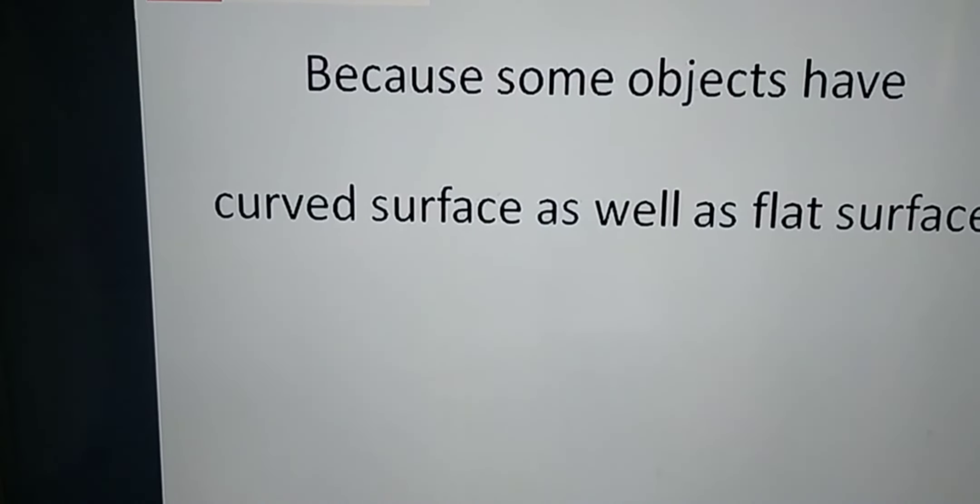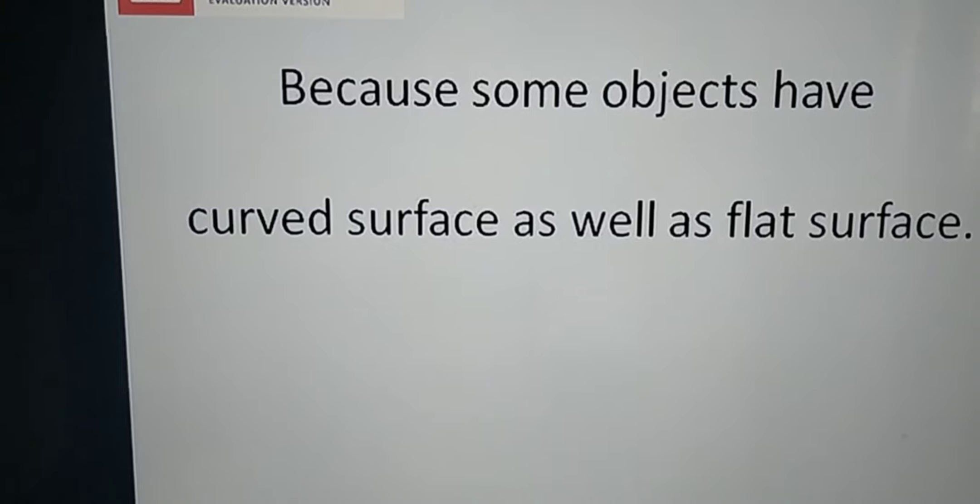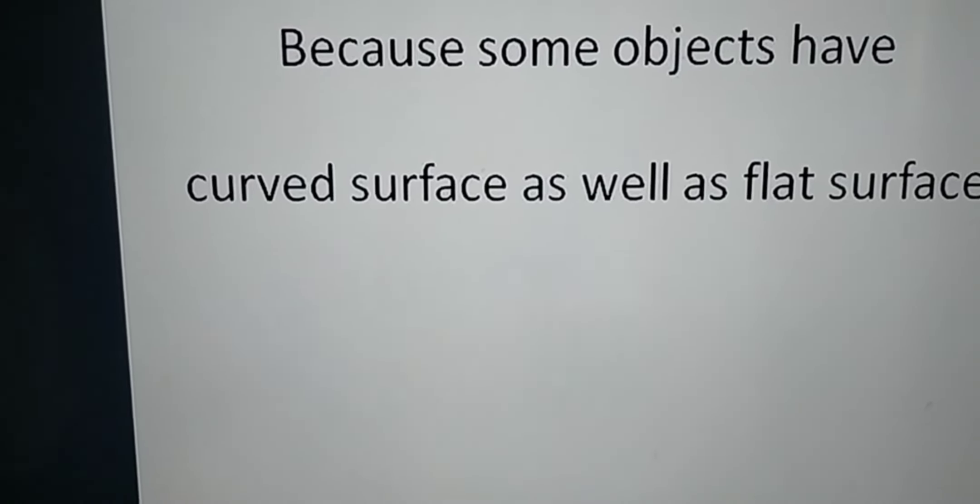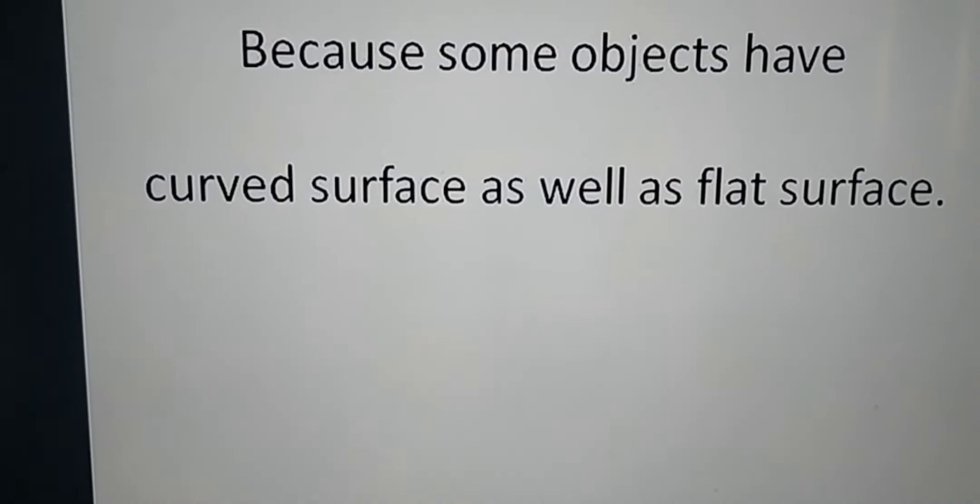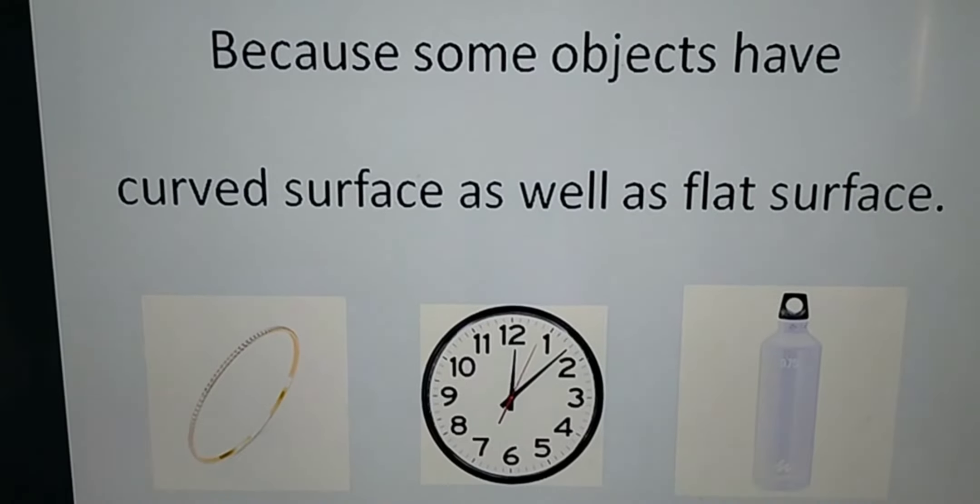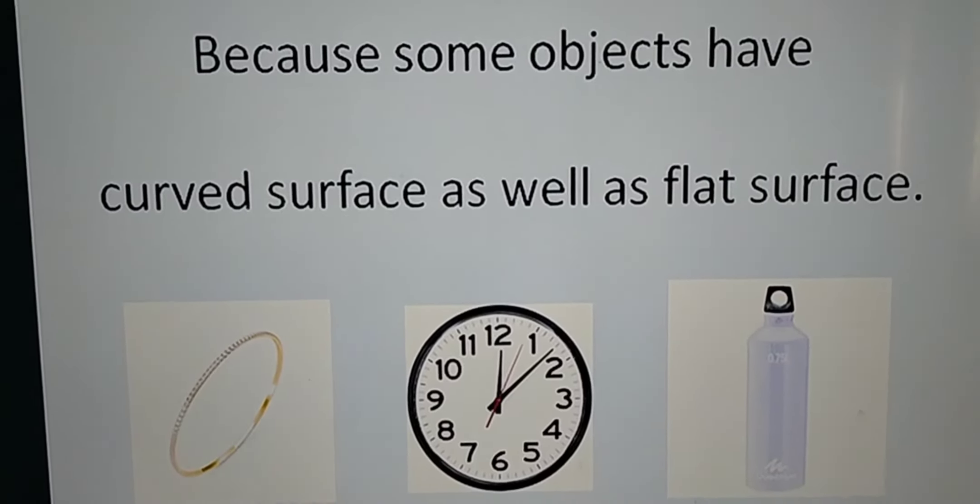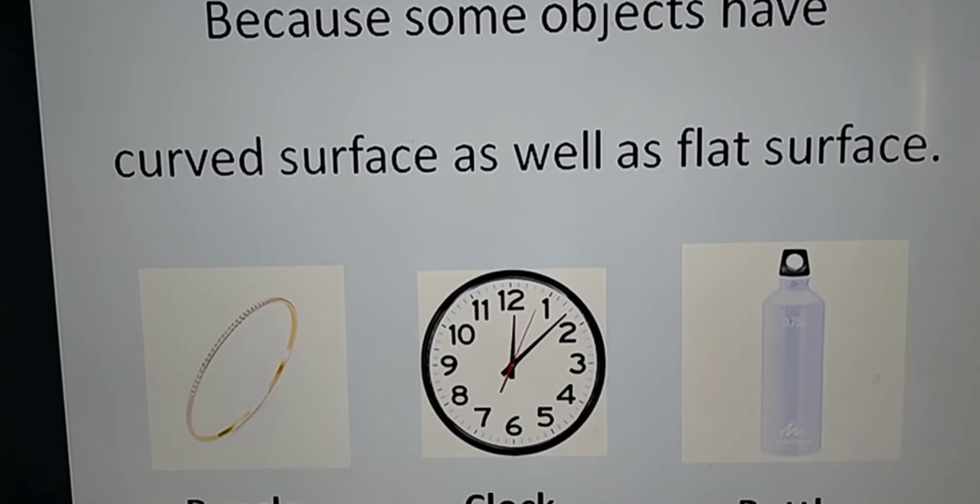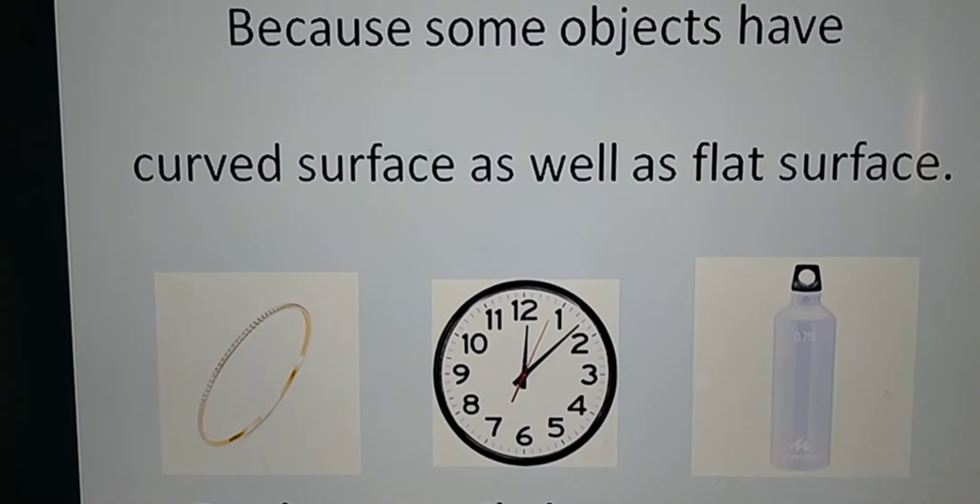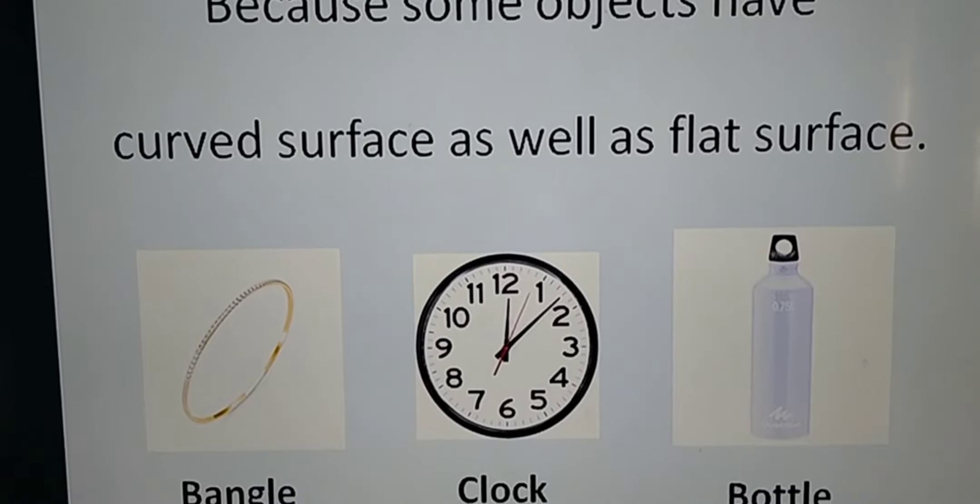Because some objects have curved surface as well as flat surface. So they roll and slide. You can see a few examples which can roll as well as slide, like bangle, clock, and water bottle. So they can roll as well as slide also.